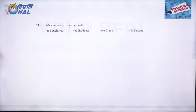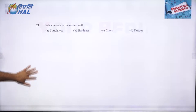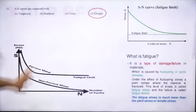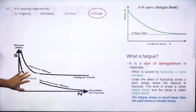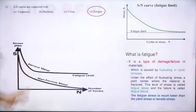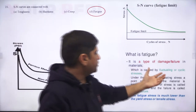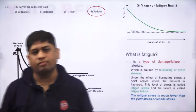SN curves are connected with fatigue. Fatigue is caused by fluctuating or cyclic stresses. SN curves (stress vs. number of cycles) are used to characterize the fatigue behavior of materials — they show the relationship between the applied stress amplitude and the number of cycles to failure.